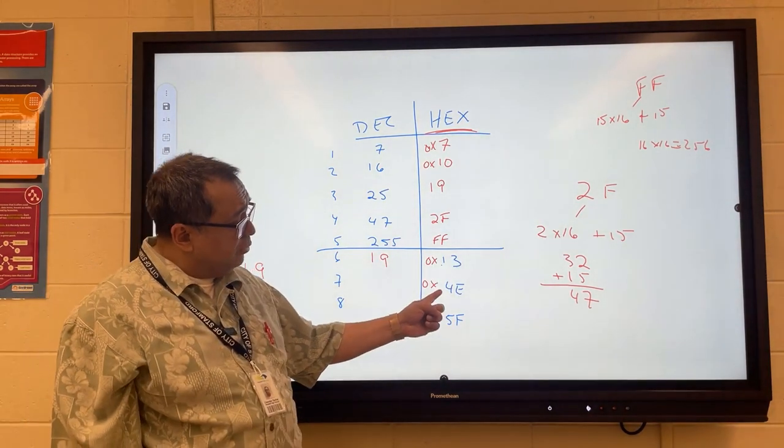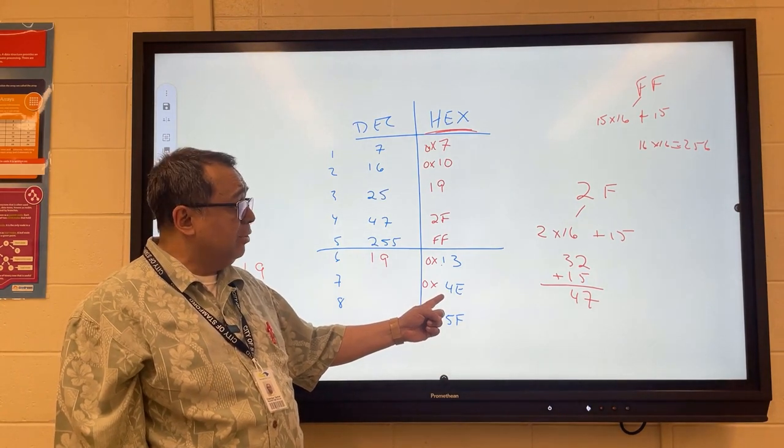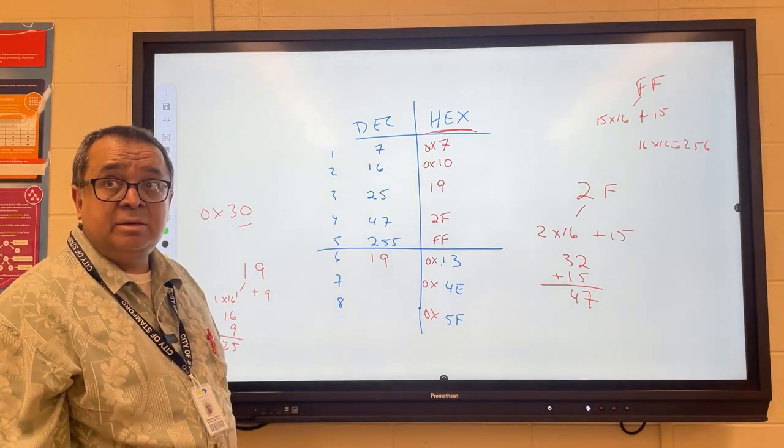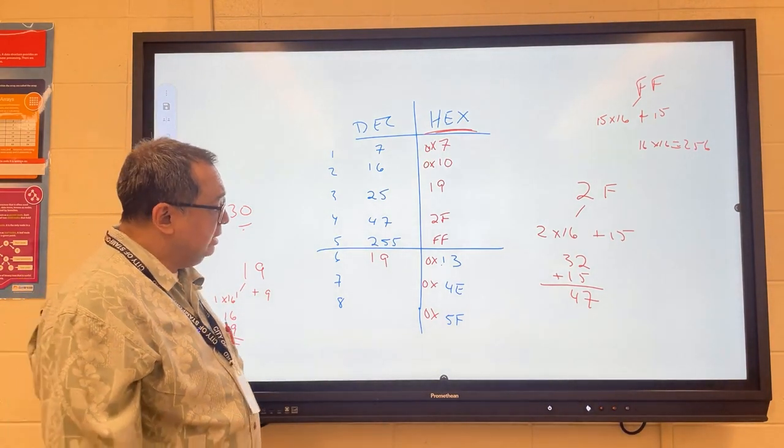This number here is 4 times 16. That's 64 plus 14. So how much is that? Yes? 38. I think it's 78.